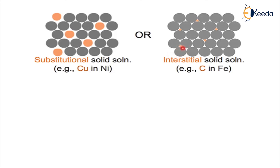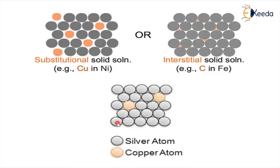For interstitial solid solution, the example is carbon in iron. Assume all atoms are iron atoms. The orange space atom represents carbon occupying the void space between iron atoms. This is another example of interstitial solid solution. If the void space is occupied by the foreign atom, it is interstitial; if the original space is occupied, it is substitutional. Another example of substitutional solid solution is silver and copper, where copper occupies the original atom's space in silver.